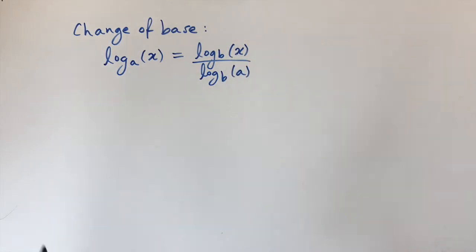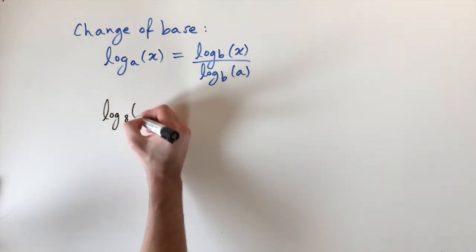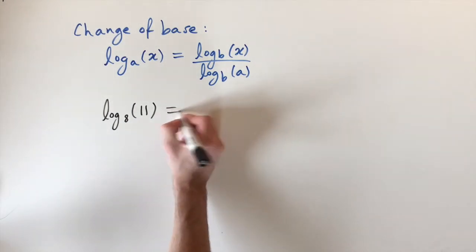So let's look at an example just to get an idea of how this works. If we have a logarithm to the base 8 of 11, and let's say we want to express this in base 10, maybe that's easy to calculate, then using this formula we have the ratio of these two logs.